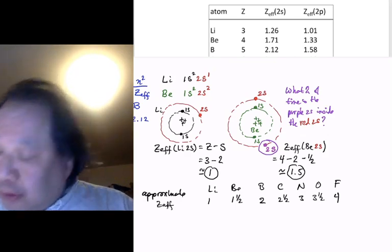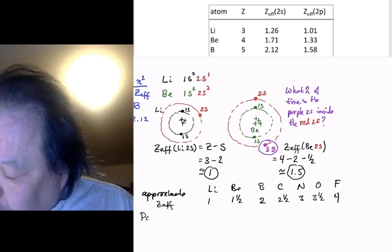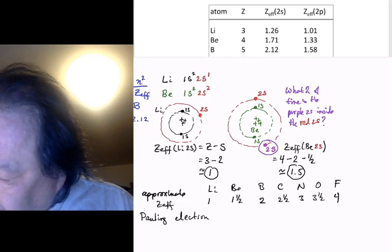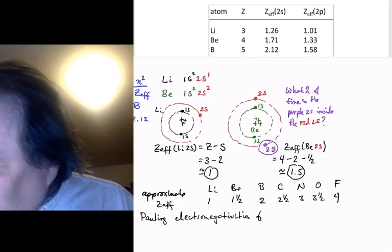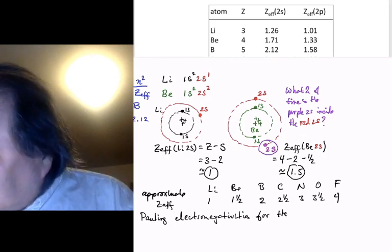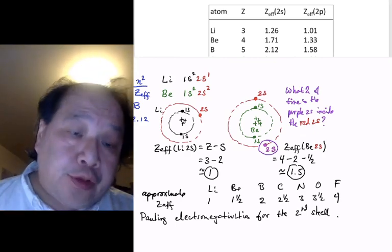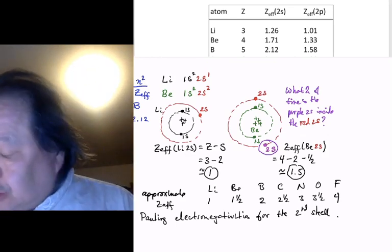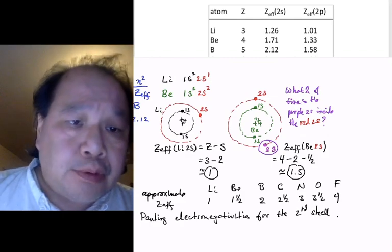These are the numbers that are the Pauling electronegativities for the second shell. Pauling electronegativities are based on thermochemistry, but they're actually standardized to these approximate Z-effectives caused by this very simple shell model.